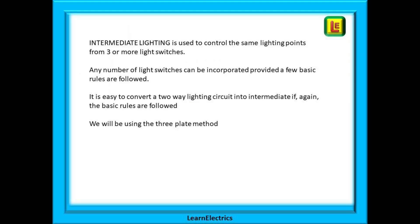Intermediate lighting is used to control the same lighting points from three or more light switches. Any number of light switches can be incorporated provided a few basic rules are followed. We will be using the three plate method here as recommended in the current wiring publications.